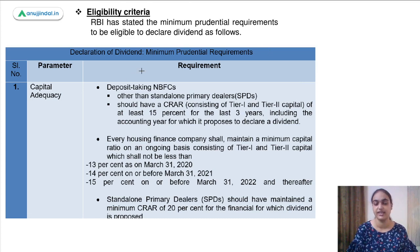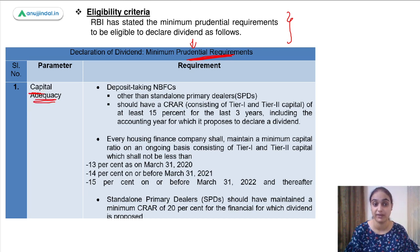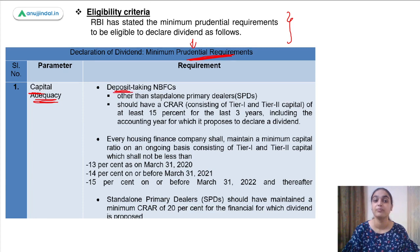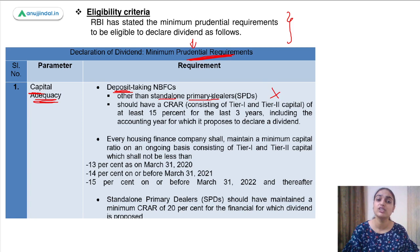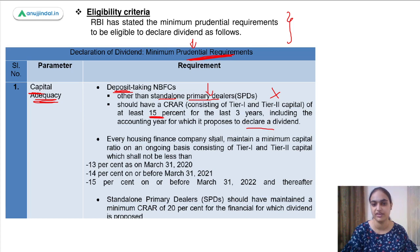Talking about the eligibility criteria — which NBFCs can declare dividend — the NBFCs which fulfill the following prudential requirements can declare dividends. Regarding capital adequacy: deposit-taking NBFCs, other than standalone primary dealers, should have a CRAR of 15% for the last three years including the year for which they propose to declare a dividend. For housing finance companies, the requirement is 13% as on 31st March 2020, 14% for 31st March 2021, and 15% on or before 31st March 2022.